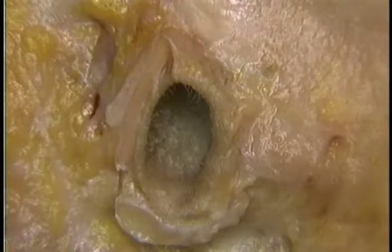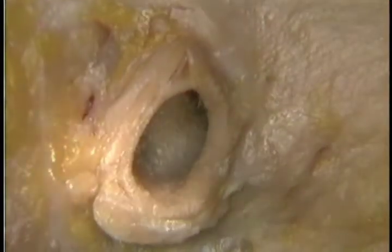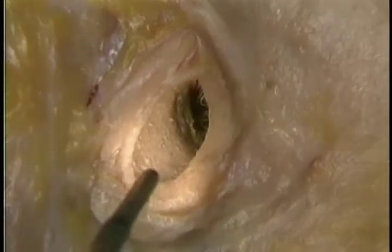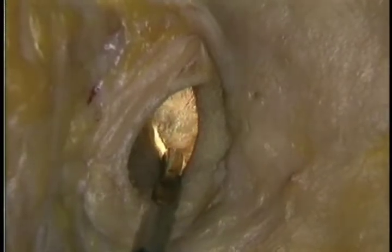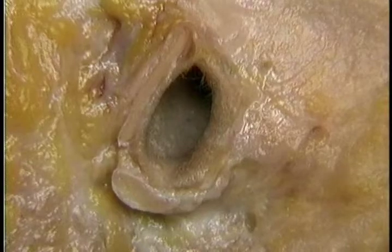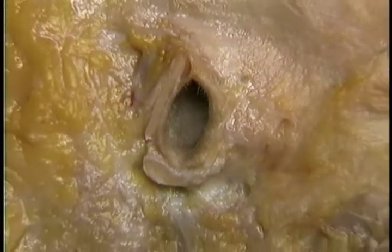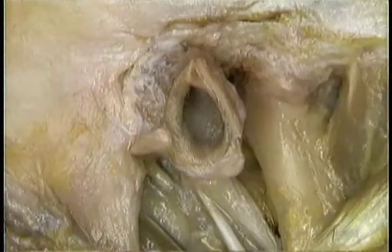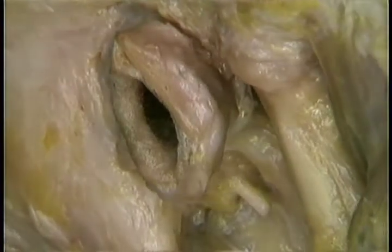The external auditory meatus is lined with skin. It isn't straight — it curves slightly upwards, then slightly backwards. The external meatus ends medially at the ear drum or tympanic membrane. The outer part of the external meatus is supported by a partial tube of cartilage, continuous with the cartilage of the auricle. Here's the cartilage of the external auditory meatus; it extends much further below than it does above.